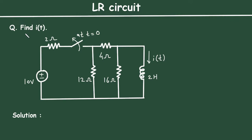LR circuit question: find I of t. In this circuit we have to find I of t. As we can see, this circuit consists of various resistors and one inductor. So this is an RL circuit.